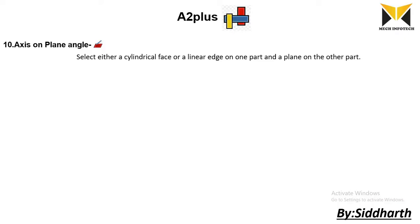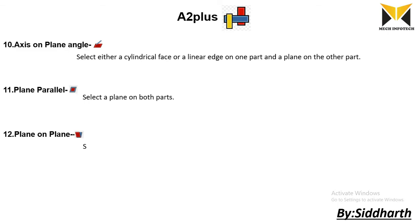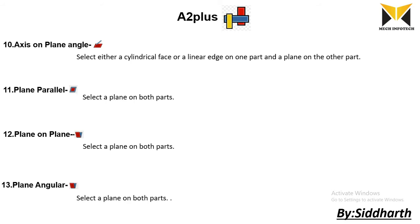The 11th constraint is plane parallel. The 12th constraint is plane on plane. The 13th constraint is plane angular. These constraints have a similar selection — in these constraints we can select a plane on both parts. Let's go solve one example.